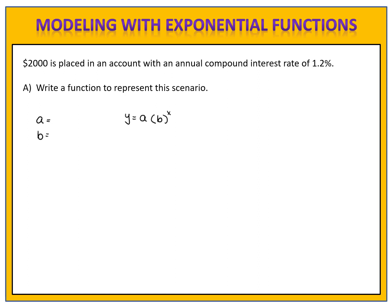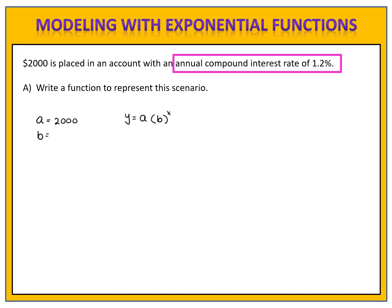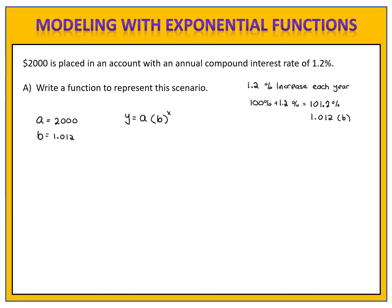Please pause the video and see if you can write the function. $2,000 is what we start with, so a is $2,000. b is the factor — we're growing at a rate of 1.2% each year, so we have 100% plus 1.2% equals 101.2%. Converting to a decimal gives us 1.012, which is our value for b. The function is y equals 2,000 times 1.012 to the x power, which represents the amount of money in the account.